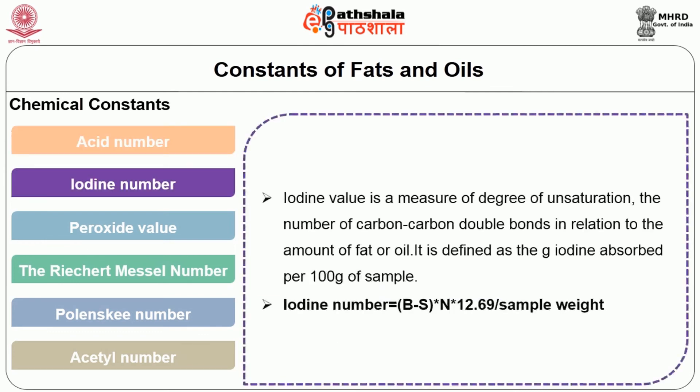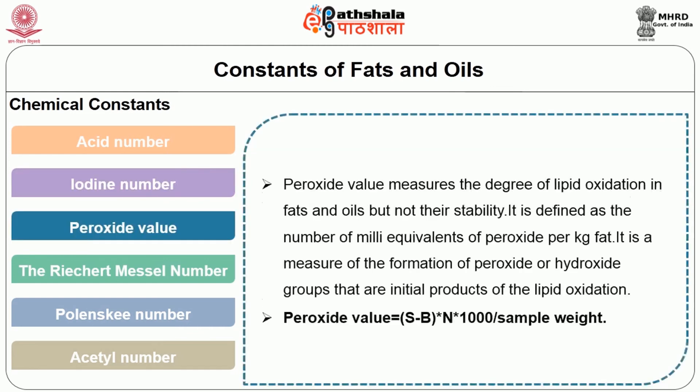The iodine number is a measure of the degree of unsaturation — the number of carbon-carbon double bonds — in relation to the amount of fat or oil. It is defined as the grams of iodine absorbed per 100 grams of sample.